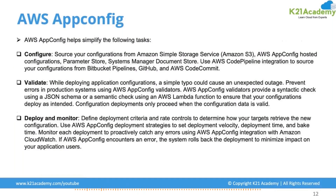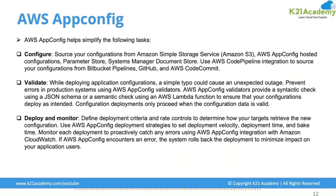AWS App Config helps simplify the pipeline. One task is configure: source your configuration from S3, an App Config hosted configuration, a Parameter Store, or a Systems Manager document store. You can also use AWS CodePipeline integration to source your configuration from Bitbucket and other AWS services — wherever you are choosing a configuration storage, you can source from there. From that, you will be able to deploy it into your application.